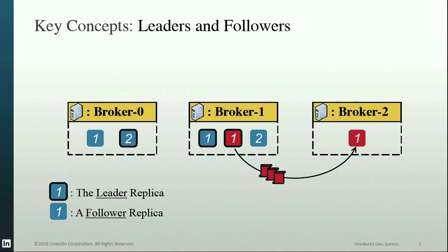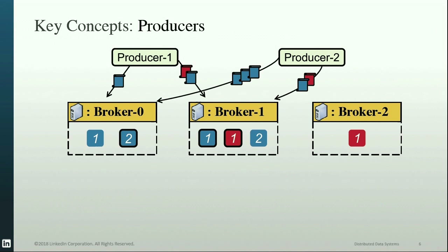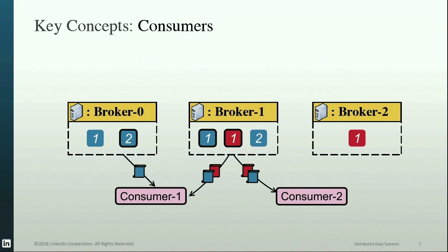The replication in Kafka is based on the primary backup model. Each partition has one leader and may have a number of followers that fetch data from this leader. If the replication factor is one, then there are no followers. On the client side, producers generate data to a selected set of leader replicas and consumers retrieve this data from the leader replicas for processing in their own application logic.